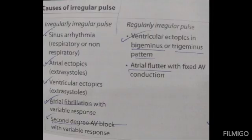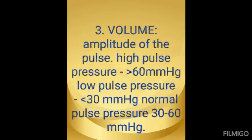There are two types of irregular pulse: irregularly irregular and regularly irregular. Irregularly irregular pulse is caused by sinus arrhythmia, atrial ectopics, ventricular ectopics, atrial fibrillation with variable response, and second-degree AV block with variable response. Regularly irregular pulse is caused by ventricular ectopics in a trigeminal pattern and atrial flutter.